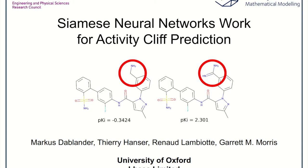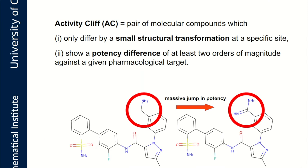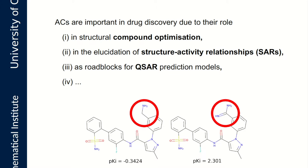I'm Markus Dablander, a DPhil student from the University of Oxford, and I'm going to talk about joint research with Thierry Hanser from LASA Limited and Renaud Lambiotte and Garrett Morris from the University of Oxford. Our work is concerned with the prediction of activity cliffs in chemical space. Activity cliffs are pairs of molecular compounds which only differ by a small structural transformation at a specific site, but show a large potency difference of at least two orders of magnitude against a given pharmacological target. Activity cliffs are of crucial importance in drug discovery due to their role in structural compound optimization, the elucidation of structure-activity relationships, and as roadblocks for QSAR prediction models.